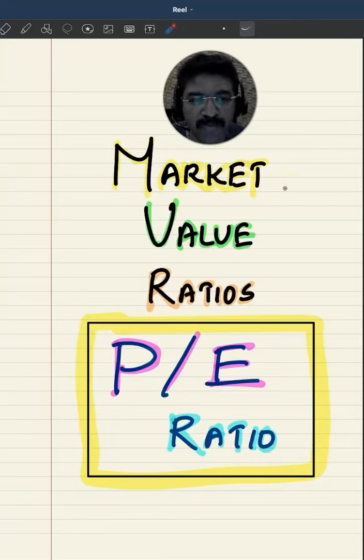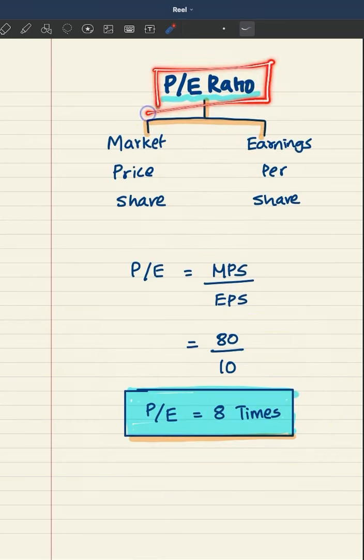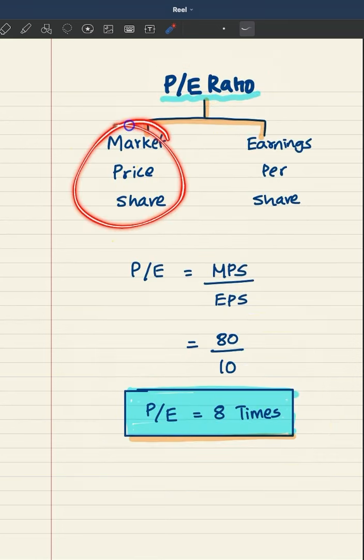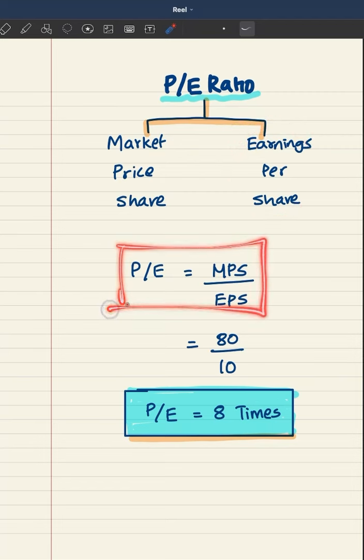Let's start talking about market value ratios. To start with, we have PE ratio. PE ratio is a ratio which compares the market price per share with earnings per share. By this comparison, we get a very important picture.